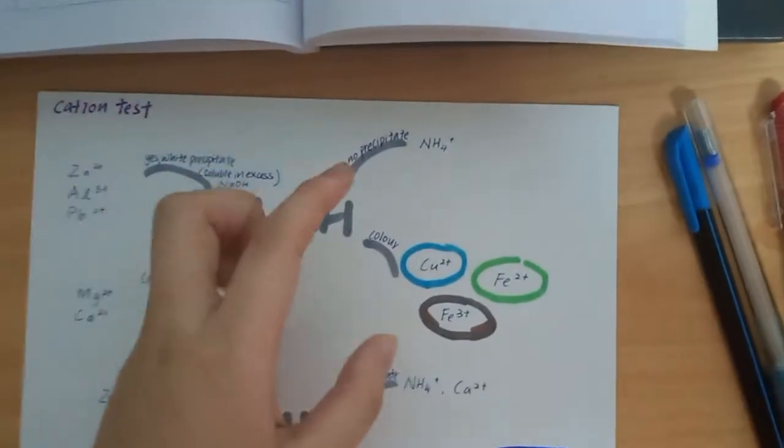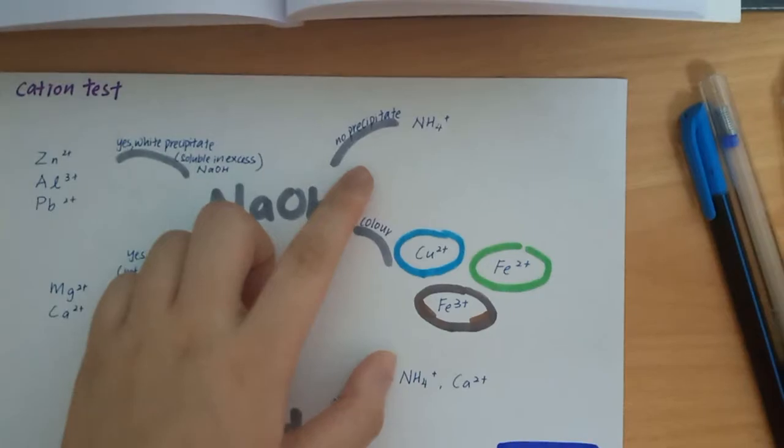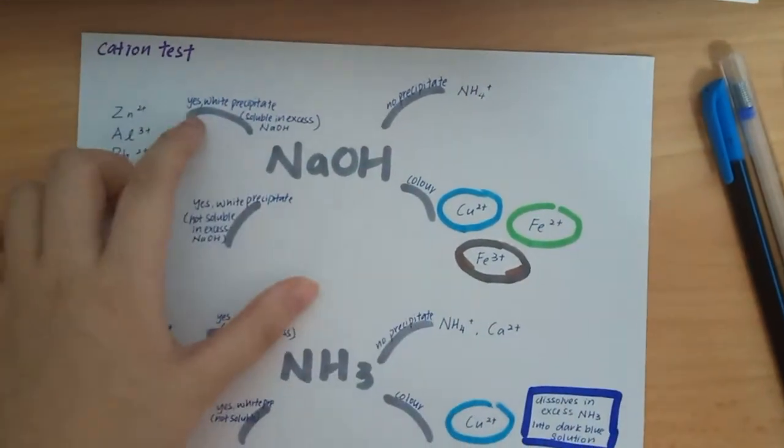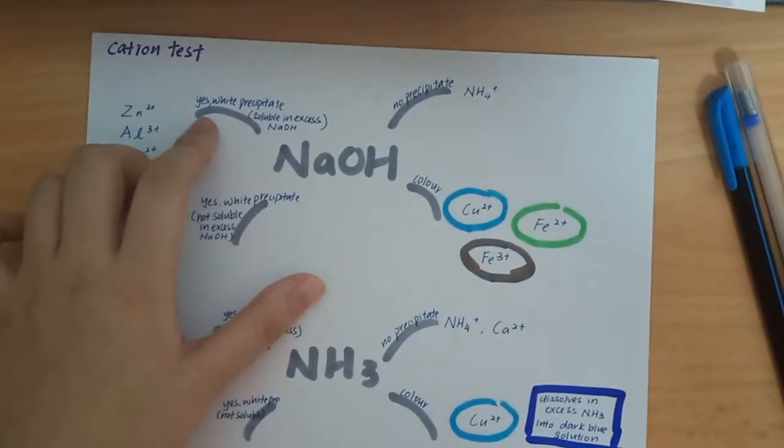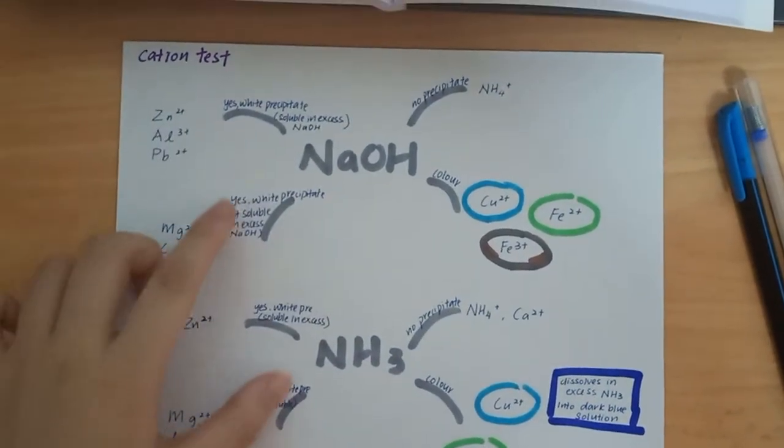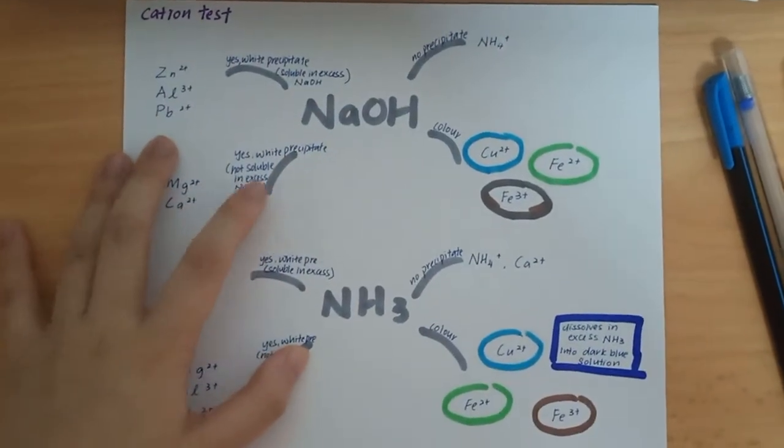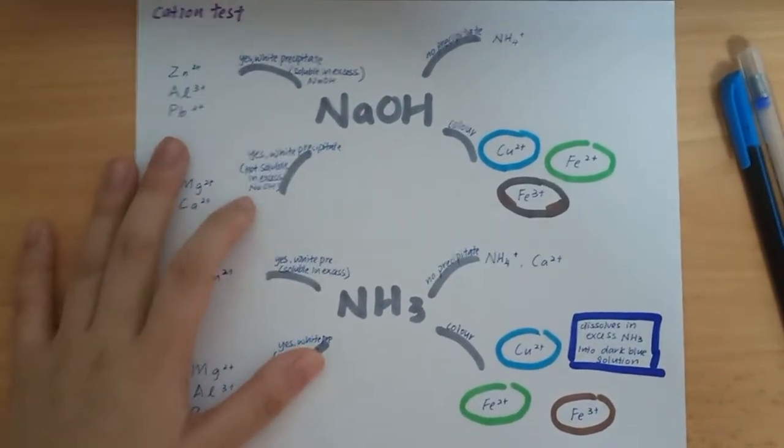We just draw these two big topics and then we put four subtopics which is the same in both. First is no precipitate, next is color precipitate, this is yes white precipitate form and it's soluble in excess solution, and then the other one is yes white precipitate and it's not soluble in excess.